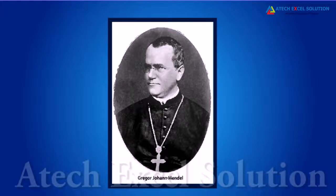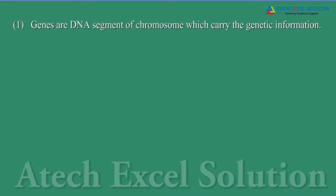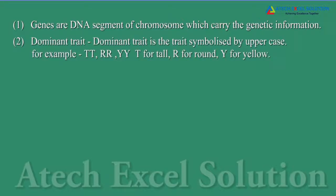A baby getting curly hair from neither of his parents is called variation. Gregor Johann Mendel, known as the father of genetics, studied the inheritance of traits in peas. This helped to arrive at the laws of inheritance and genetic variation. Let us first get familiarized with the terms used in genetics.